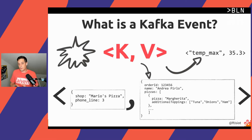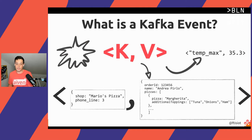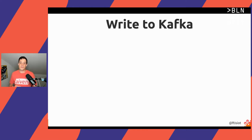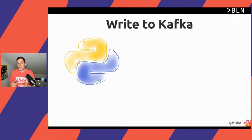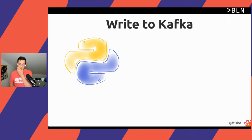Now that we understand what a message for Kafka is, it's time to understand how we can write to Kafka. If we have an application — in our case a Python application — that writes to Kafka, it's called a producer. A producer produces data to a topic.